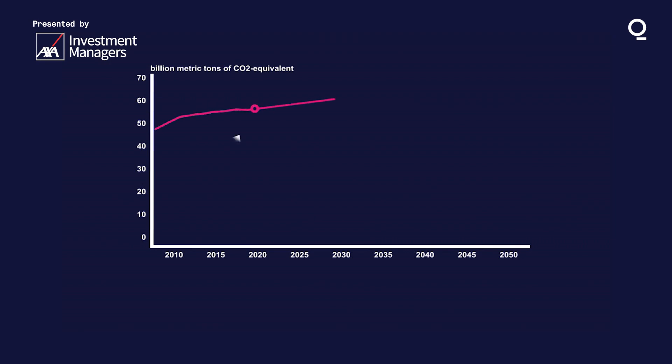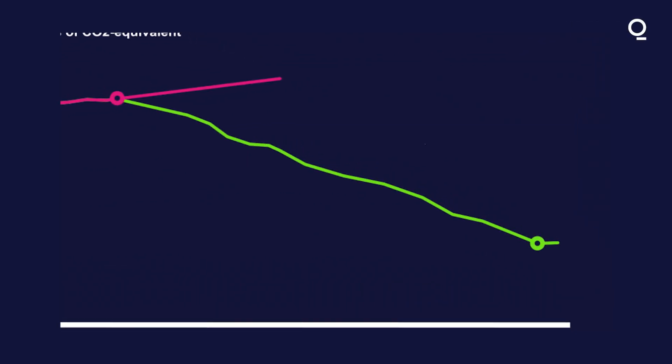This is where global emissions are today. And this is where global emissions need to get to by 2050 to stop what scientists say will be catastrophic climate change. And this space here is what's called the emissions gap.